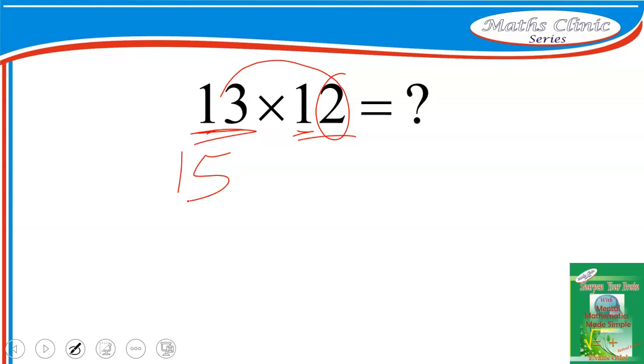Now in your mind, think of this as 150. Multiply the two numbers here, the 3 and the 2. This will give you 6. Add it to 150 and that will give you 156, which becomes the answer.